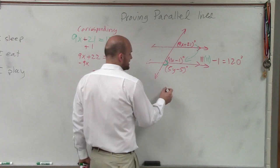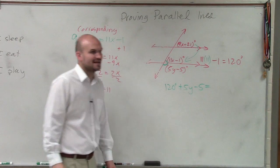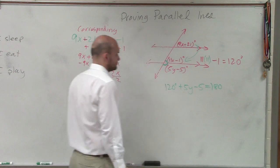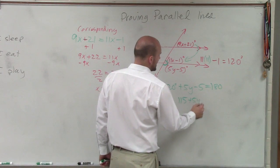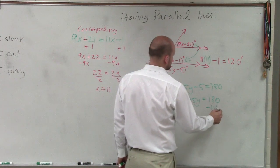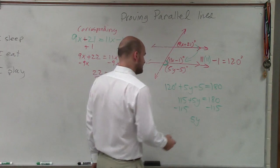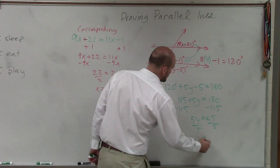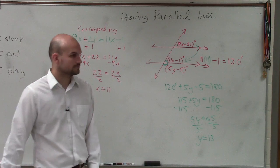So therefore, ladies and gentlemen, I can say 120 degrees plus 5y minus 5. Supplementary angles add up to 180. So therefore, this is 115 plus 5y equals 180. Subtract 115. 5y equals 65. Divide by 5. Divide by 5. y equals 13. Okay?